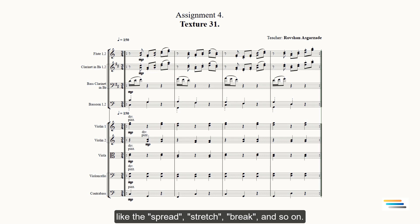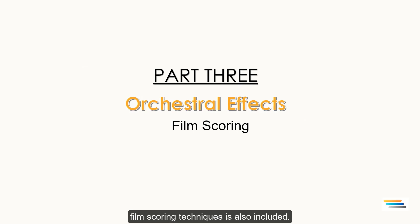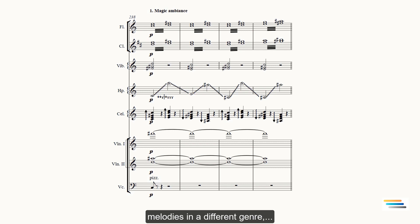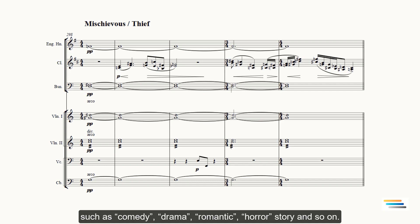Part 3: Orchestral Effects. Film scoring techniques is also included. In this part, you will learn how to make orchestral effects, chords, melodies in a different genre such as comedy, drama, romantic, horror story, and so on.